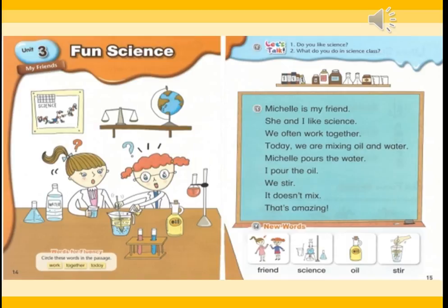Michelle is my friend. Michelle은 나의 친구입니다. She and I like science. 그녀와 나는 과학을 좋아해요. We often work together. 우리는 종종 함께 실험을 해요. Today, we are mixing oil and water. 오늘 우리는 기름과 물을 섞고 있습니다.